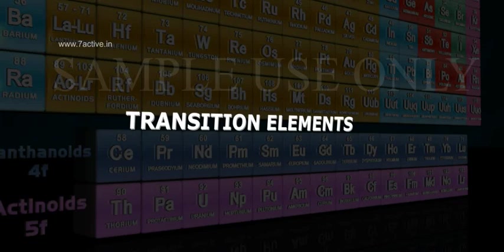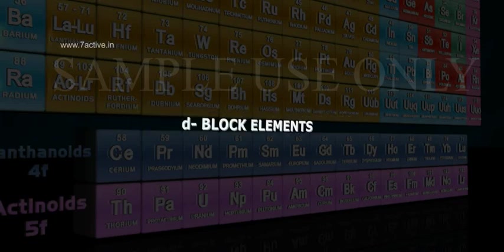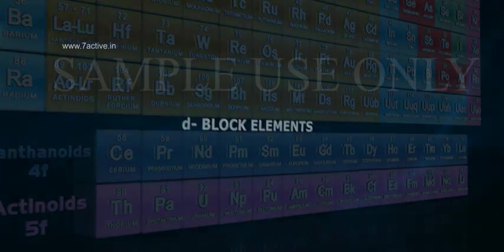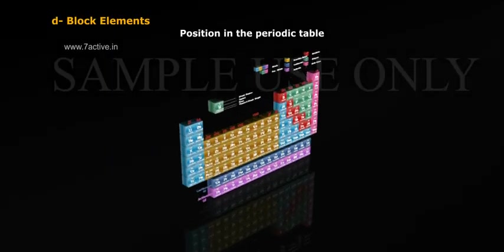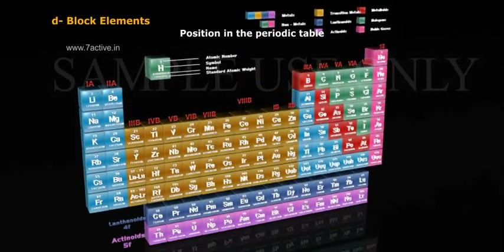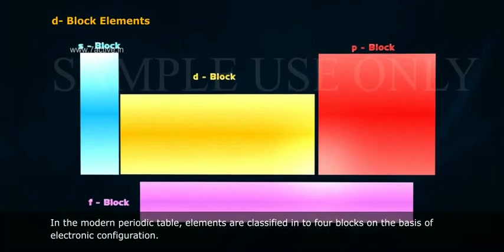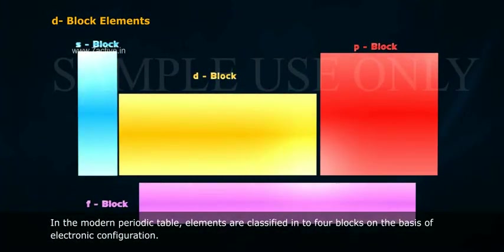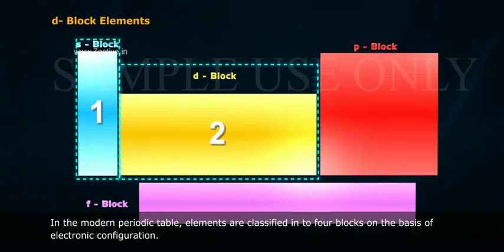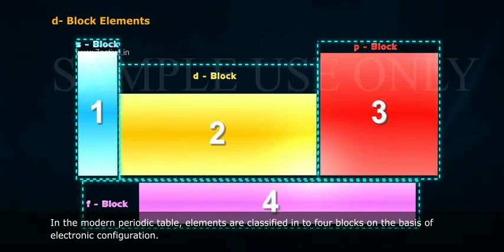Transition elements, d-block elements, position in the periodic table. In the modern periodic table, elements are classified into four blocks on the basis of electronic configuration.